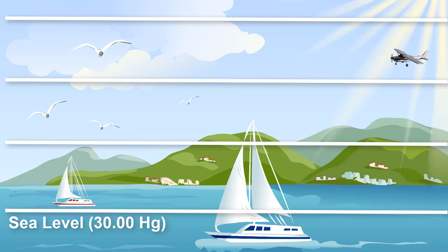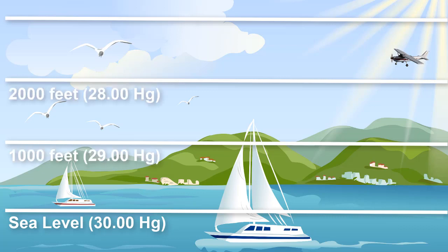So if sea level pressure is at 30 inches of mercury, at 1,000 feet the pressure will be 29 inches of mercury, at 2,000 feet 28 inches of mercury, and so on.